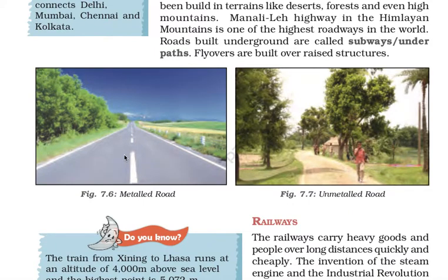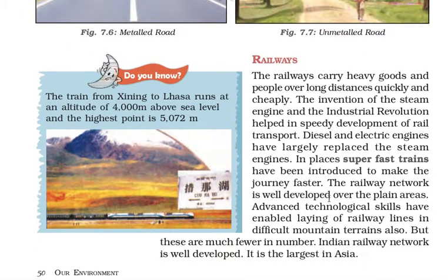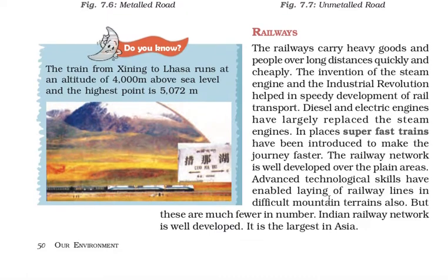In cities there are generally metalled roads, while near villages there are unmetalled roads. Railways carry heavy goods and people over long distances quickly and cheaply. It is a means of transport used to cover long distances and carry heavy goods.